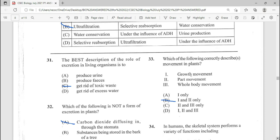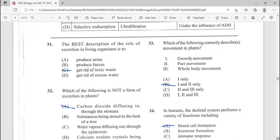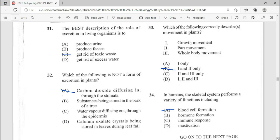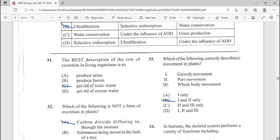31, the best description of a role of excretion in living organism is to get rid of toxic waste. C being our answer there for 31. 32, which of the following is not a form of excretion in plants? A, carbon dioxide diffusing through a stomata. That's the one we chose.